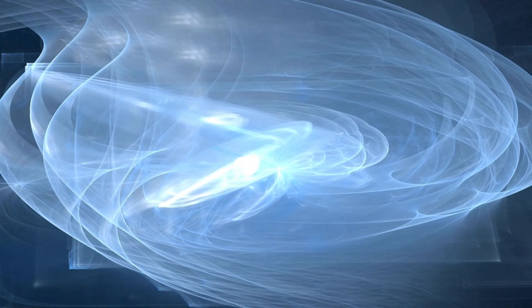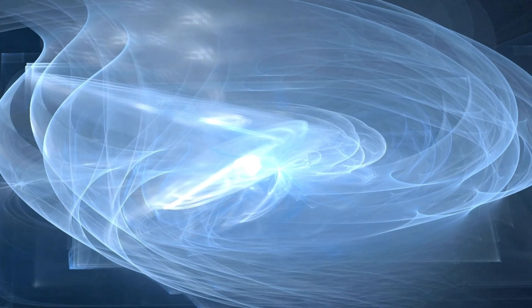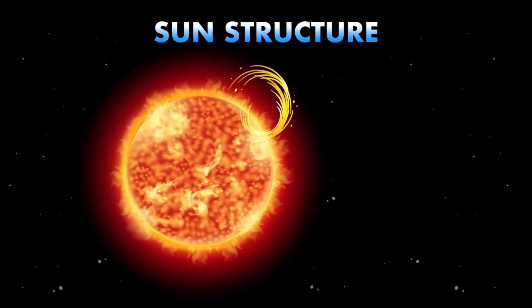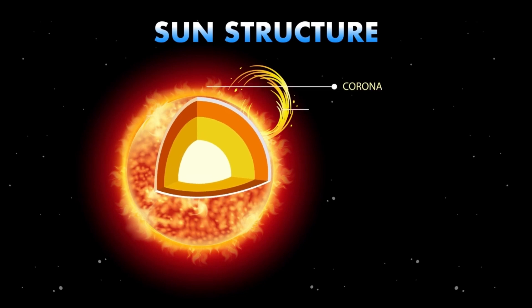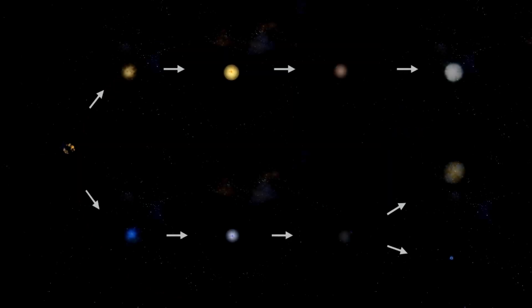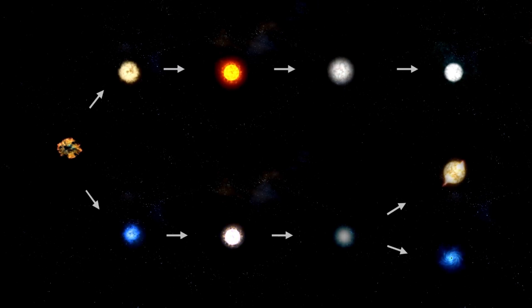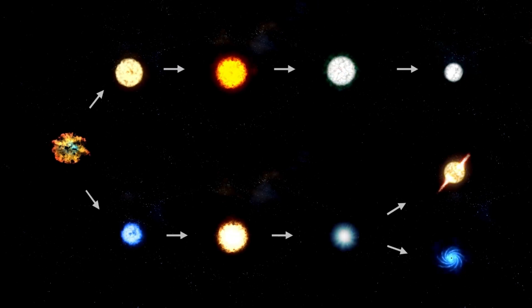Although the sun is smaller than Betelgeuse, the latter emits less energy per unit area due to its lower temperature. This makes it appear less luminous despite being one of the largest known stars. For all its massive size, Betelgeuse has been relatively stable, until recently.